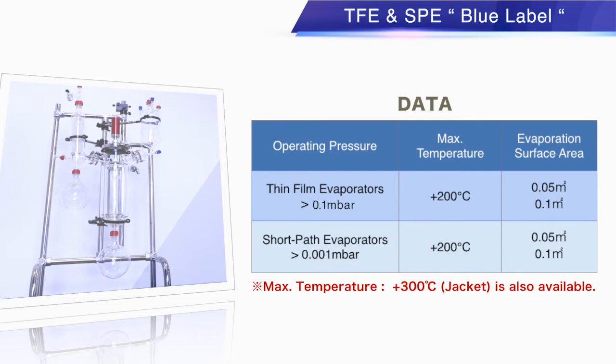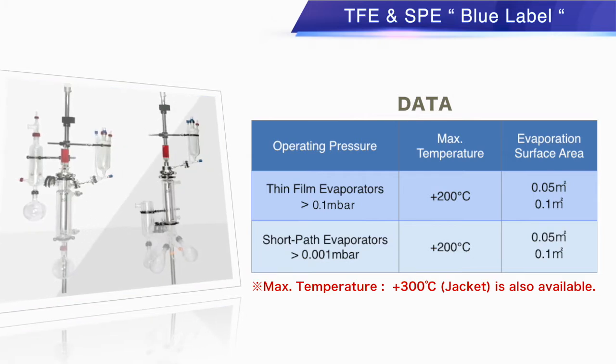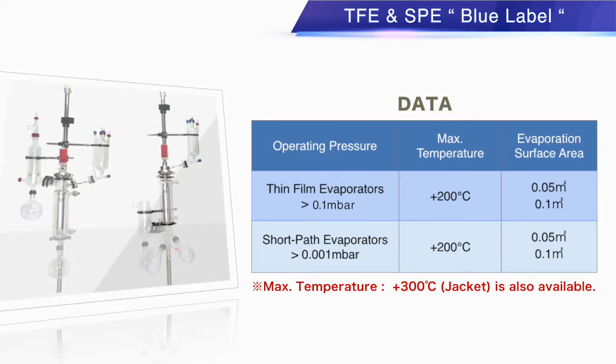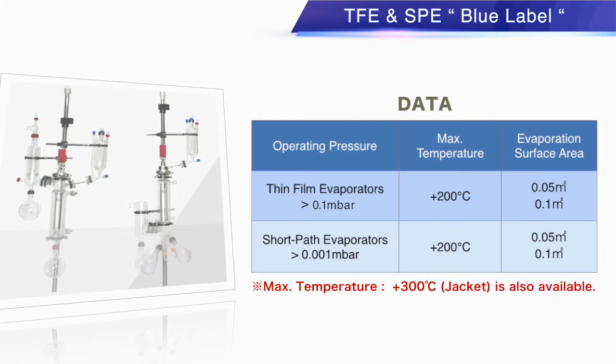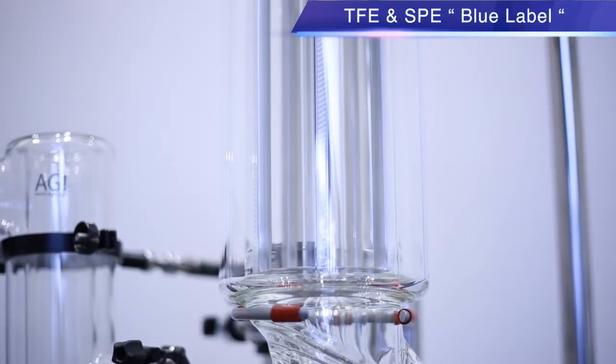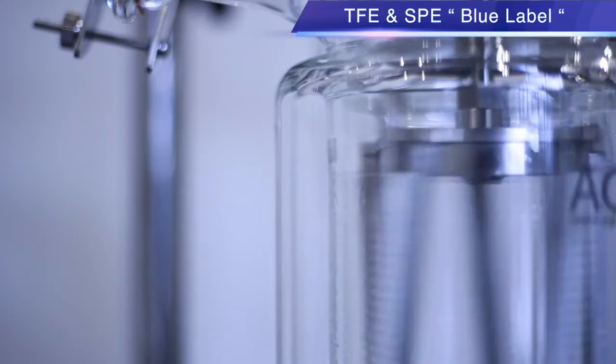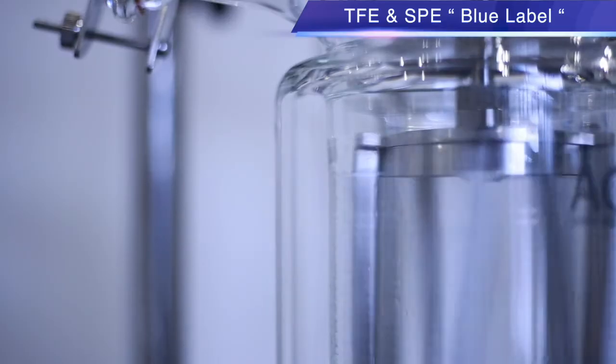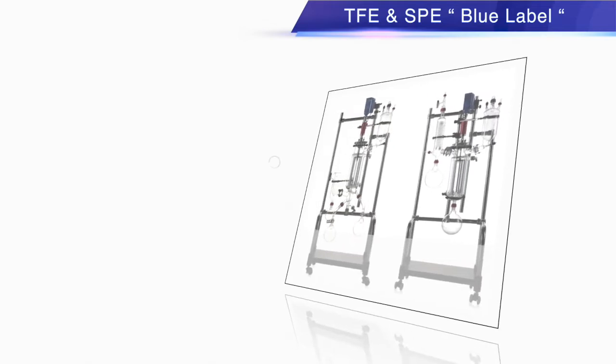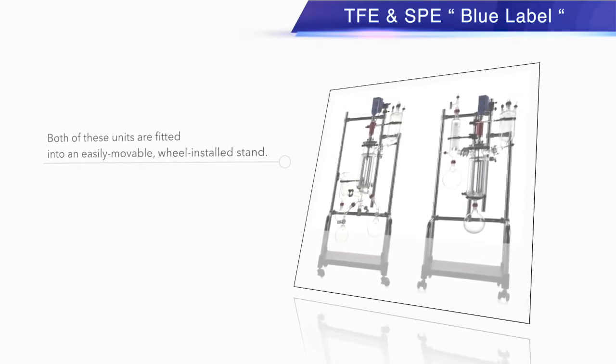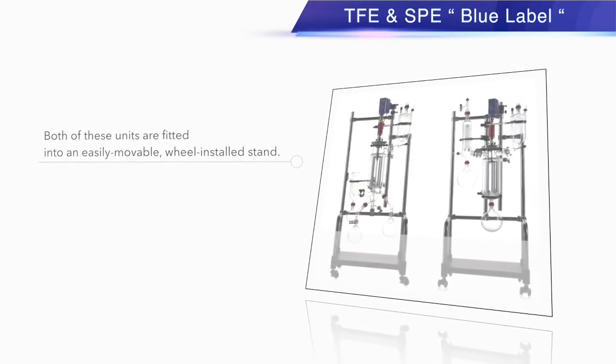Each unit comes with evaporation surface areas of 0.05 m2 or 0.1 m2. The maximum operating pressure of the Thin Film Evaporator is 100 Pa and the Short Path Evaporator is 0.1 Pa. The maximum operating temperature is 200 degrees Celsius and the wiper used is made of stainless steel and polytetrafluoroethylene.